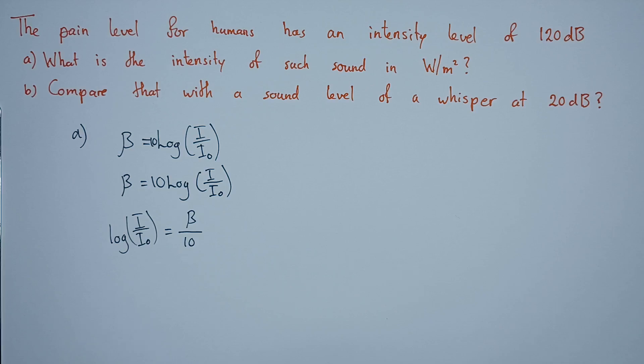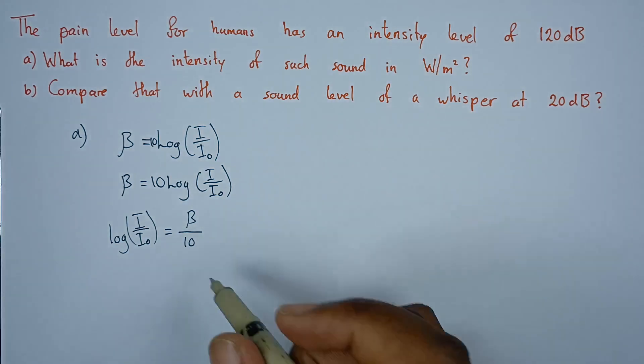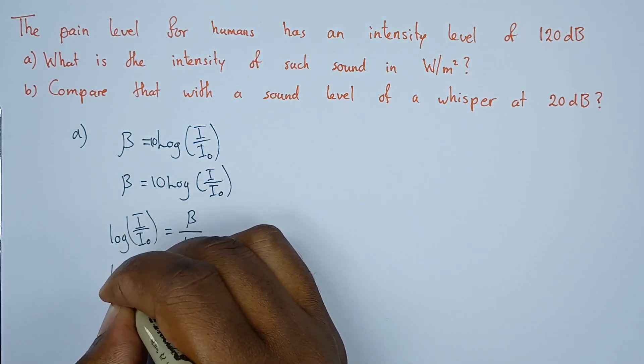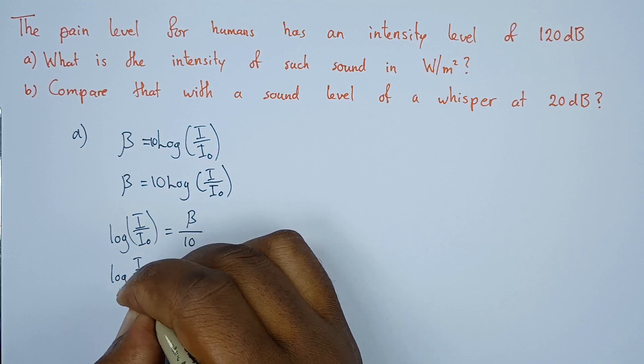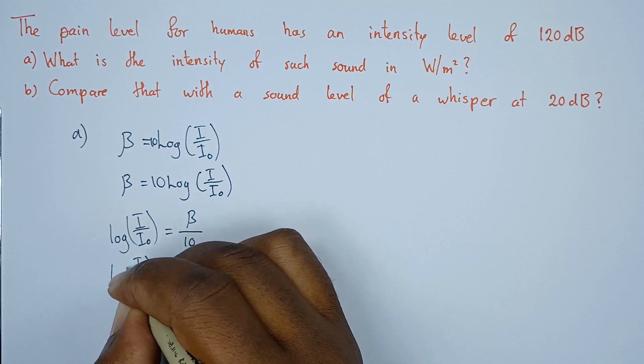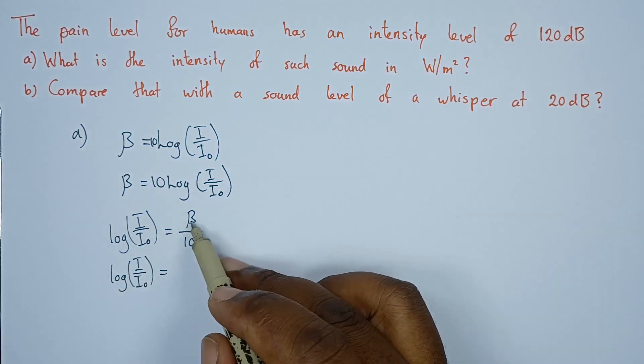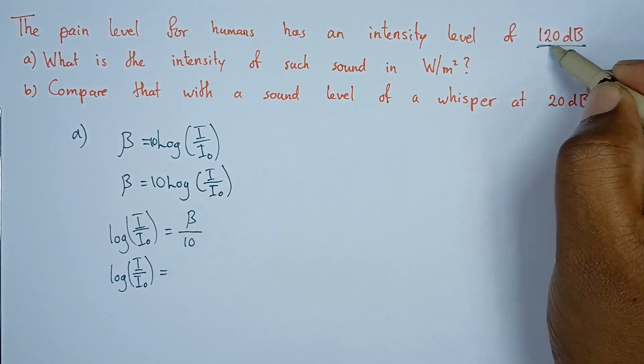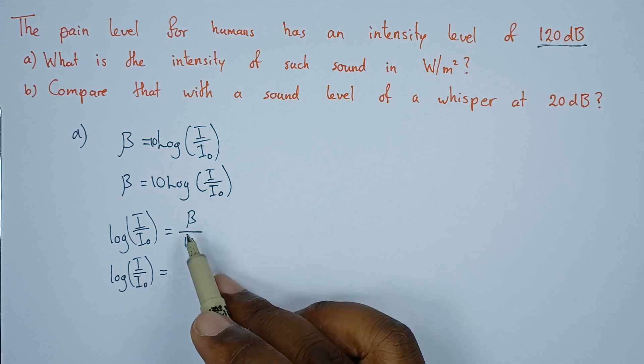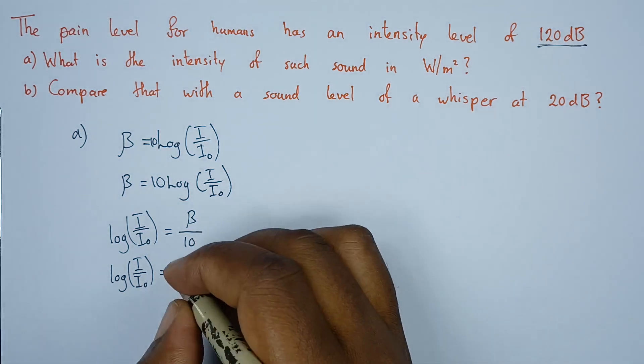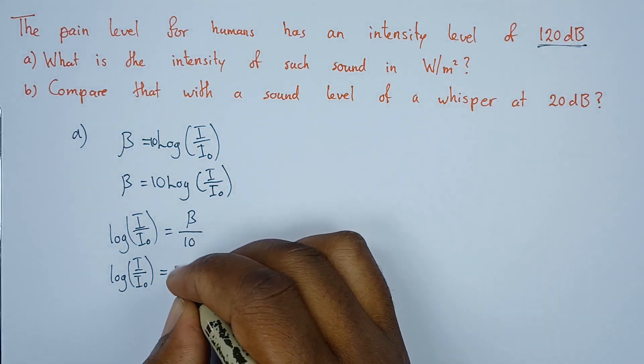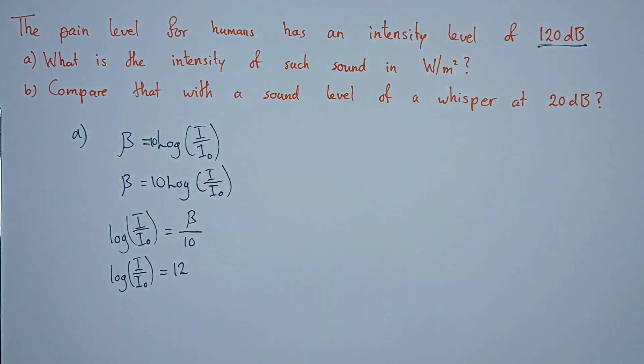We can do the substitution here. Log I over I naught, the level is 120, so that is 120 divided by 10, and that will just give us 12.